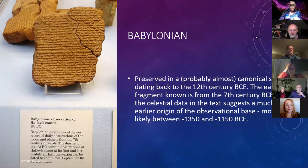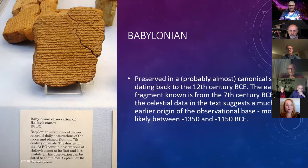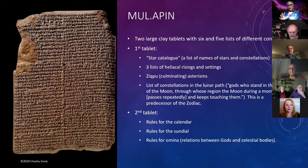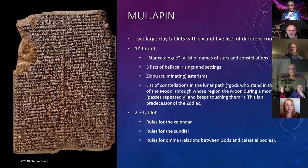The Babylonians preserved their astronomy in almost canonical state dating back to the 12th century BCE. The earliest fragment known is from the 7th century, but the celestial data suggests a much earlier origin, probably between 1350 and 1150 BCE. The two principal tablets are called Mulapin. The first has a star catalog, a list of names of stars and constellations, three lists of helical risings and settings, culminating asterisms, and a list of constellations in the lunar path — described as 'gods who stand in the path of the moon through whose region the moon during a month passes repeatedly and keeps touching them.' This is an early zodiac. The second tablet has rules for the calendar, rules for the sundial, and rules for omens relating gods to celestial bodies.